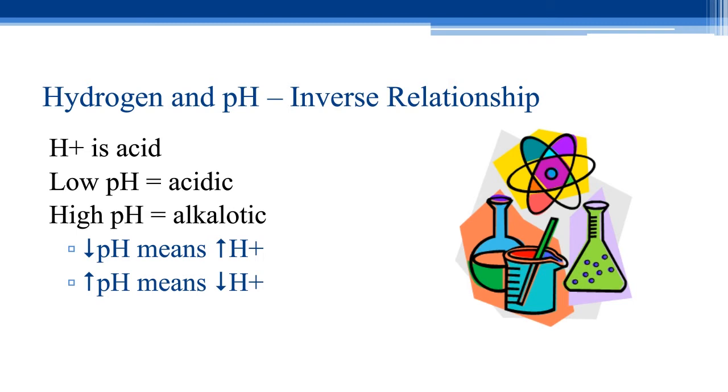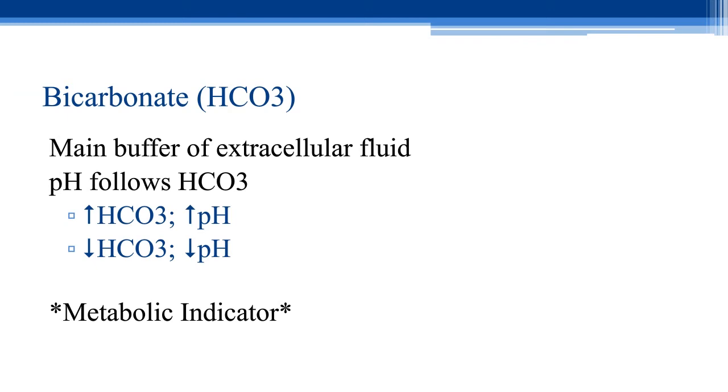Here's our bicarbonate, HCO3. This is the main buffer of extracellular fluid in the body. There are quite a few buffers, but bicarb is the main one we're going to be measuring when we're doing our acid base analysis and looking at blood gas results. pH is going to follow bicarbonate: the more bicarb you have, the higher or more basic the pH will be; the less bicarb you have circulating, the lower the pH will be. Bicarb is a base and kind of the opposite of hydrogen. Bicarbonate is our metabolic indicator - just remember, bicarb equals metabolic.